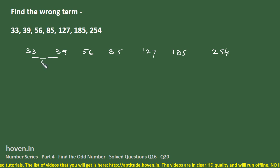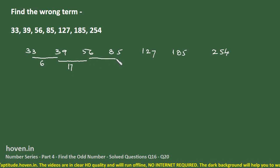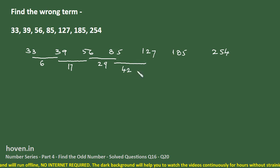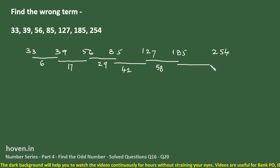The difference here is 6. The difference between 39 and 56, that difference we can write as 17 here. Then this difference is 29, 85 to 127 the difference is 42, from 127 to 185 the difference is 58, and the last difference is 69. This is a typically tough question.